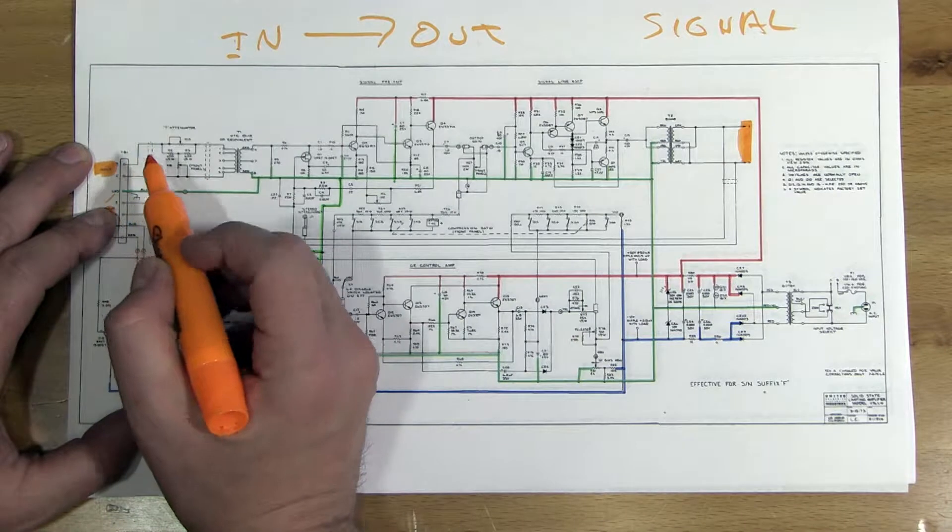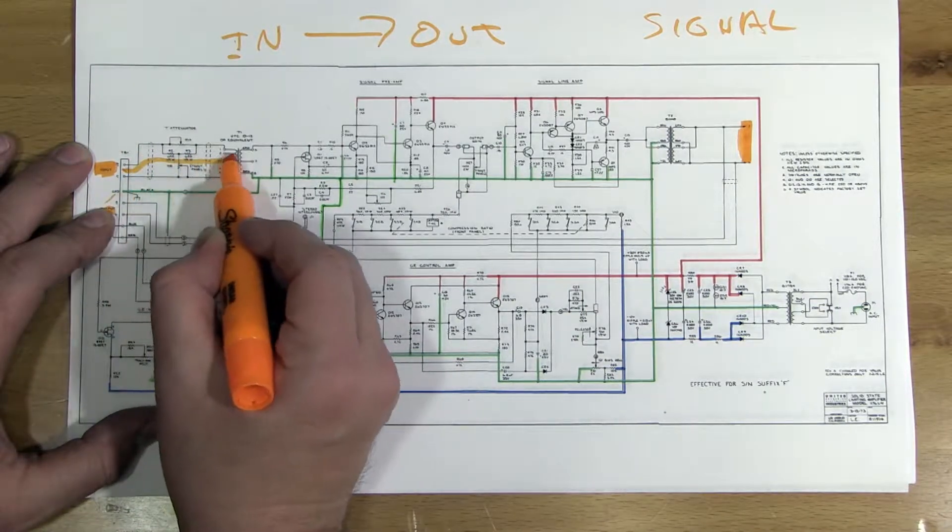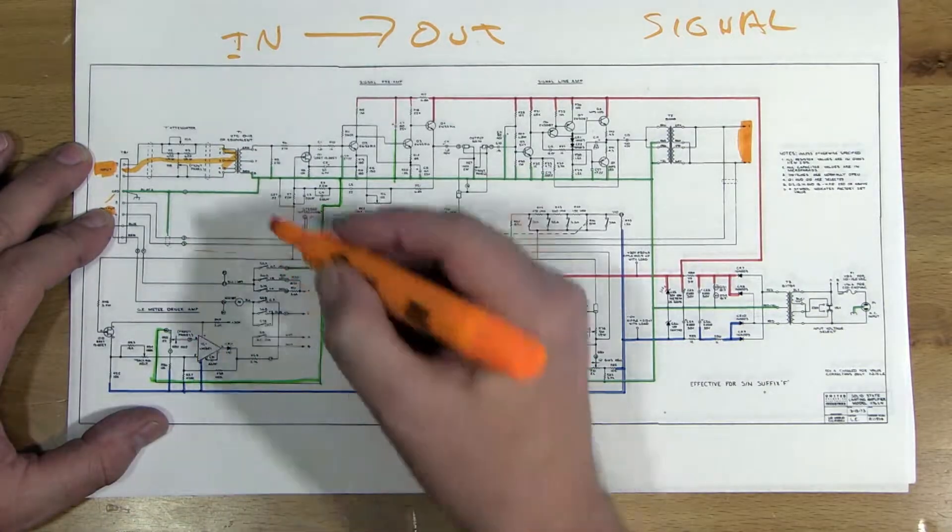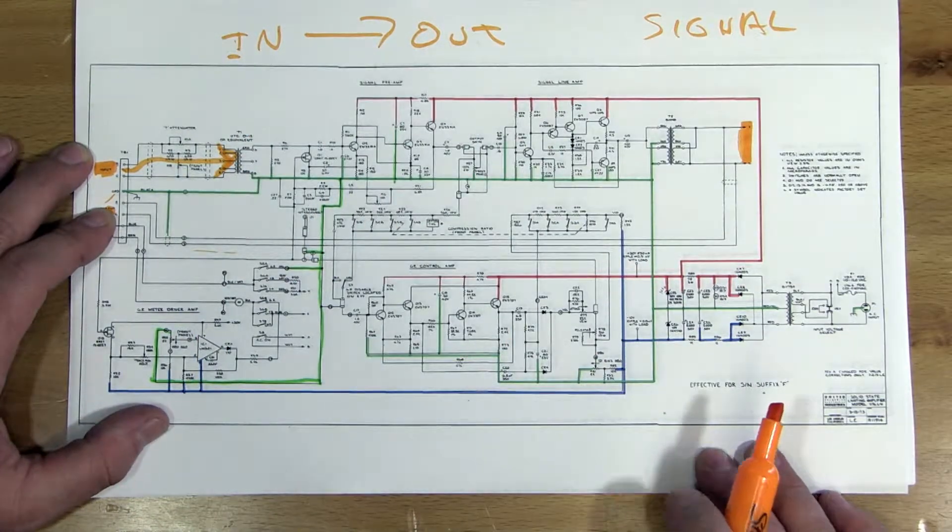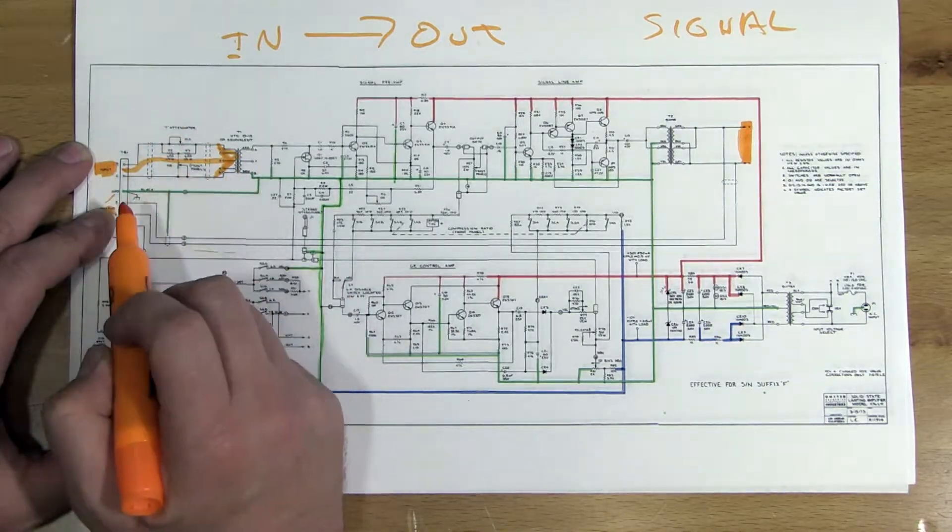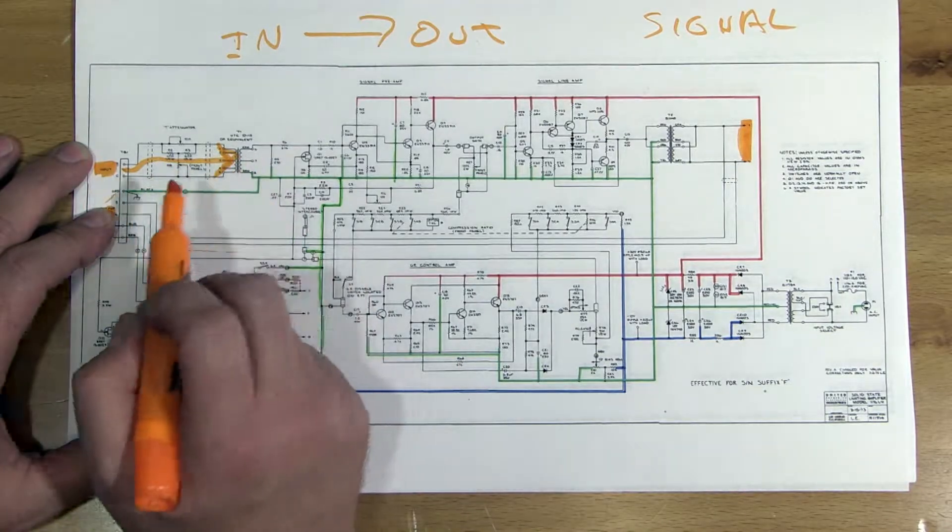So in this case what I would do is just say the signal goes hot and cold into the transformer. That's supposed to be an arrow. If you wanted to draw two different polarities and all that stuff you could, but all we care about is it's going through this transformer to get in.